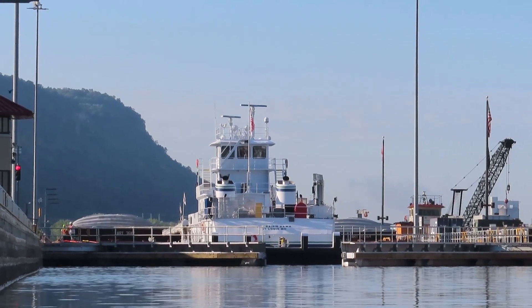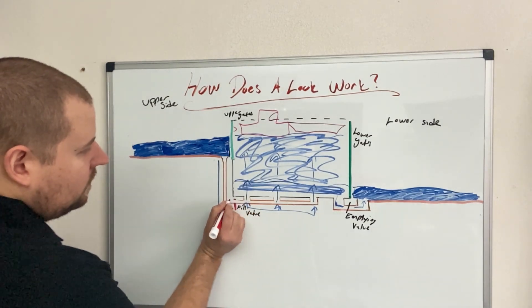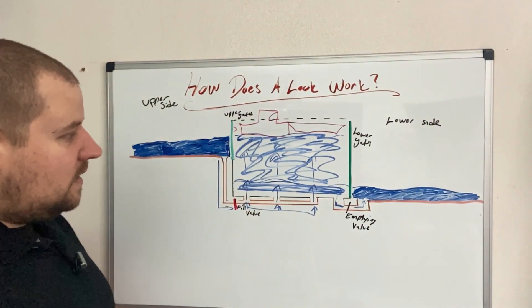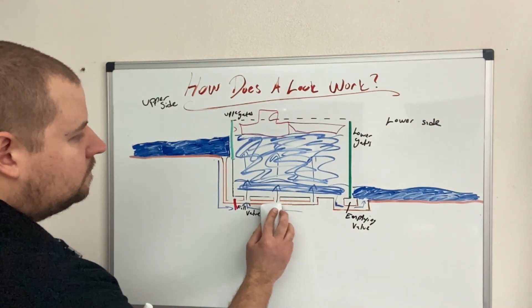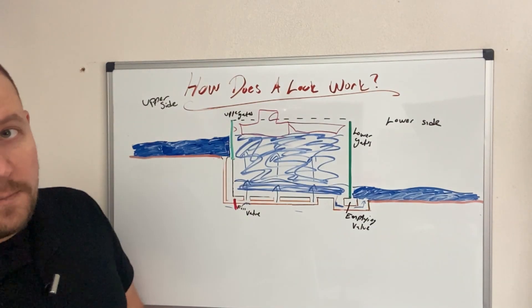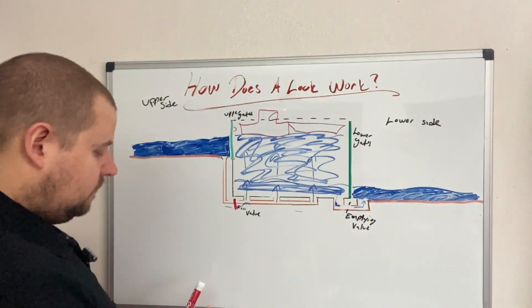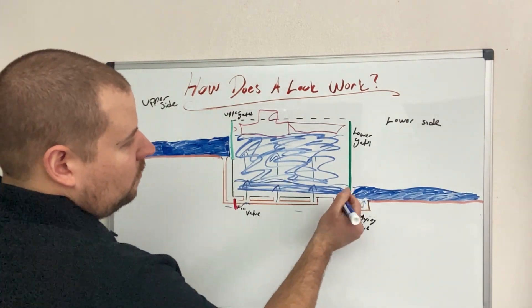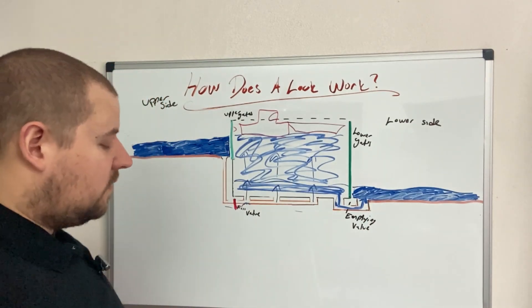They re-shut that gate. They will close this fill valve. Closing that fill valve now cuts off the water coming from the upper river. They will now open this valve and now the water that is in the lock chamber will free flow back into the lower river.